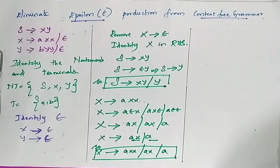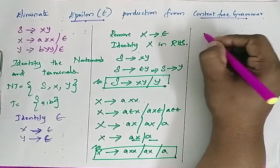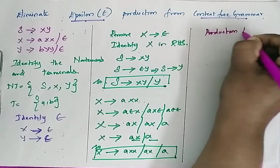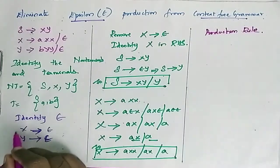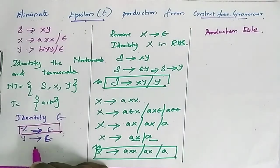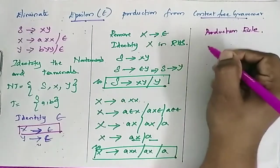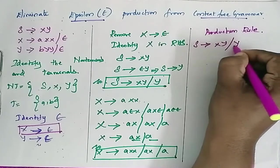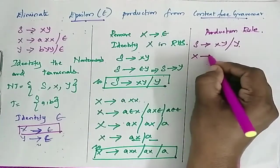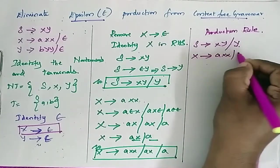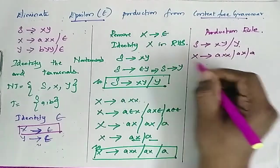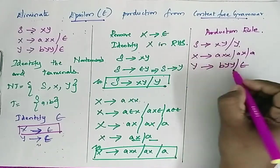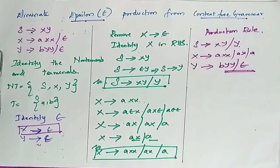The updated production rules after removing X determines epsilon are: S determines XY slash Y; X determines AX slash A; Y determines BYY slash epsilon. We still need to remove Y determines epsilon.